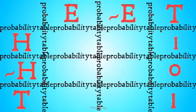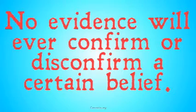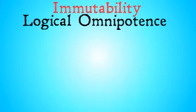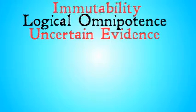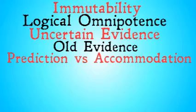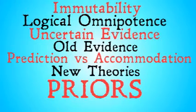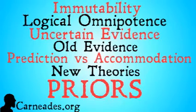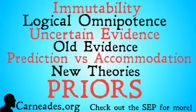In other words, if you are certain of any hypothesis, no evidence will ever confirm or disconfirm that hypothesis for you. That was the immutability of logic. Next up is logical omnipotence, uncertain evidence, old evidence, prediction versus accommodation, new theories, and the problem of the priors. Watch this video and more at Carnades.org, check out the SEP for all these objections and more, and stay skeptical, everybody.